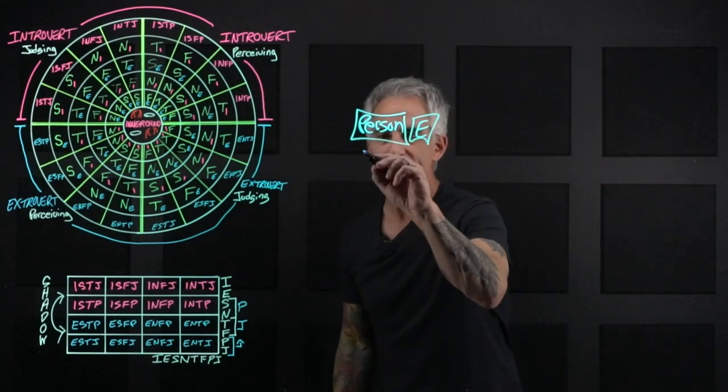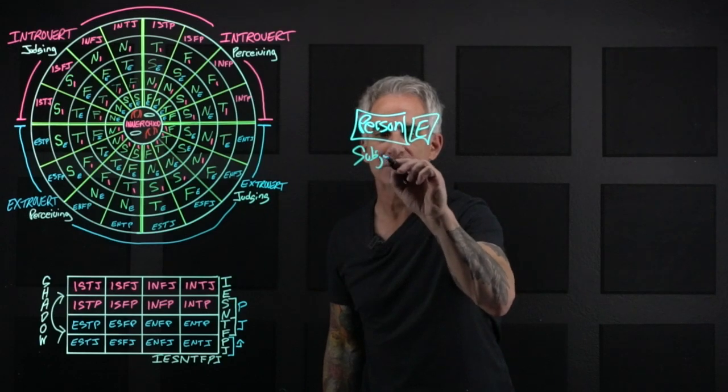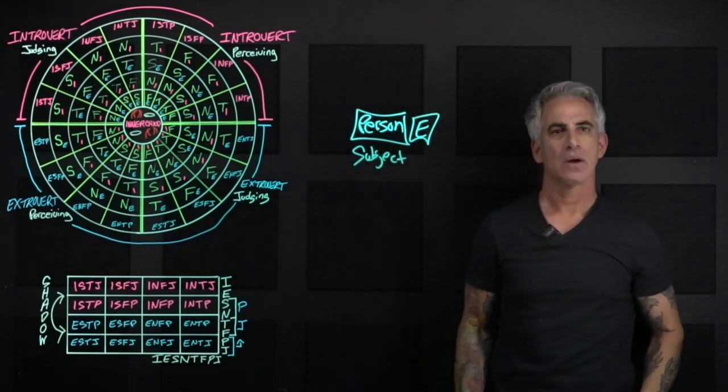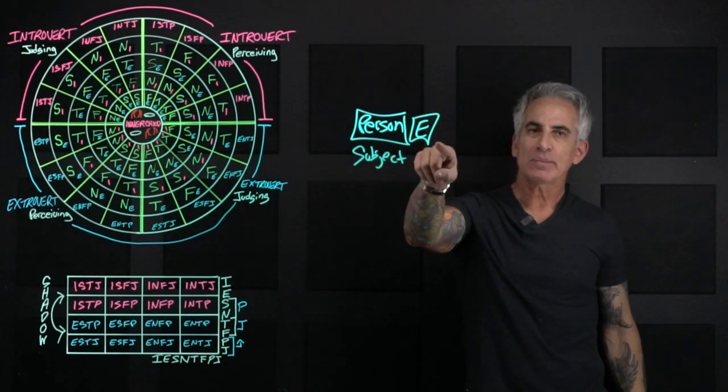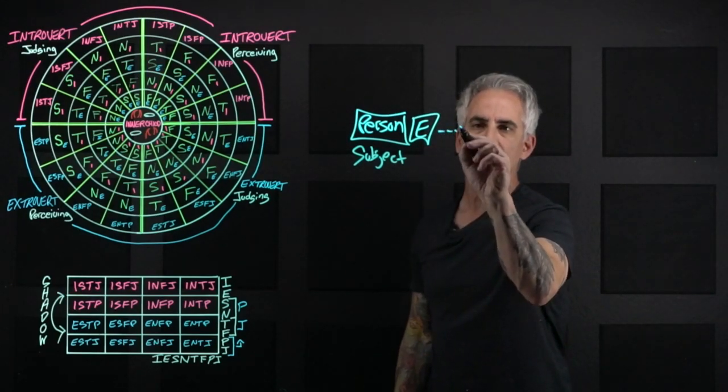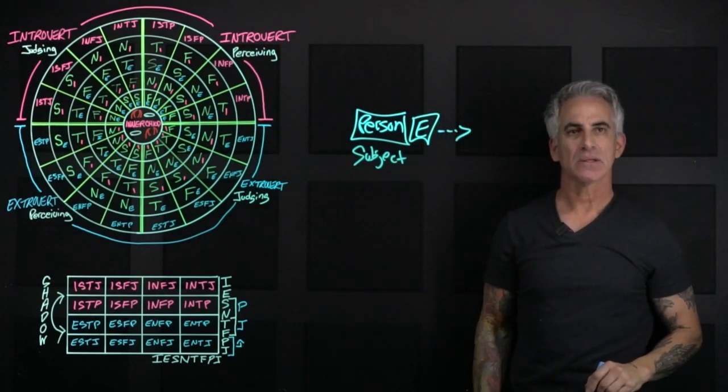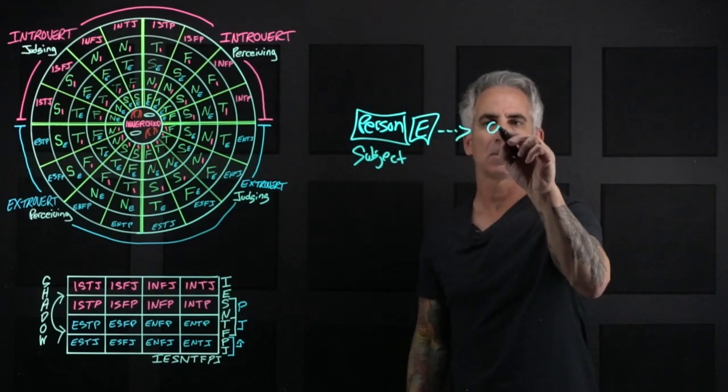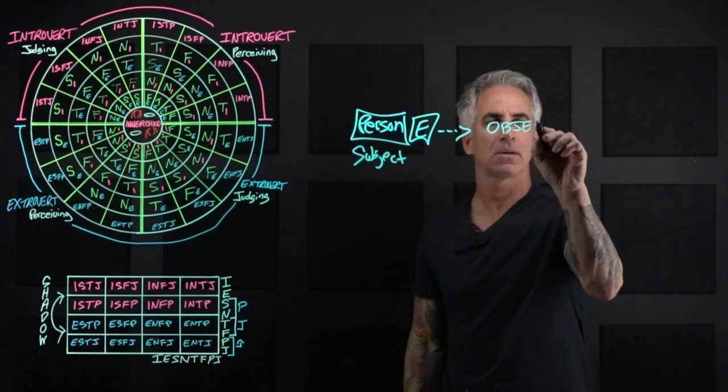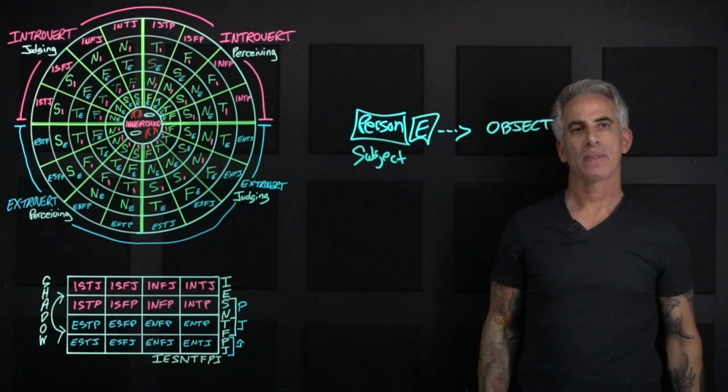This person is the subject, but an extroverted person is going to be looking at the object.